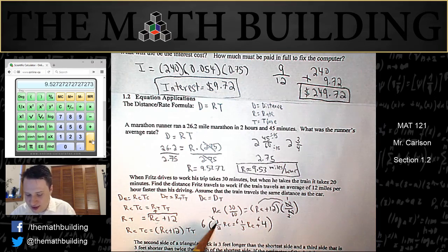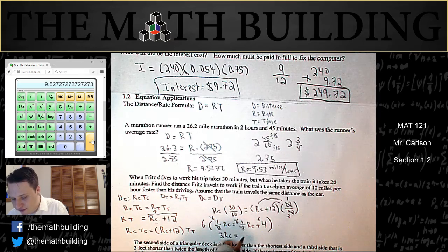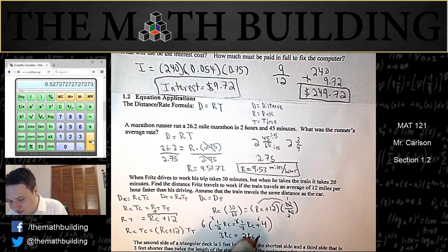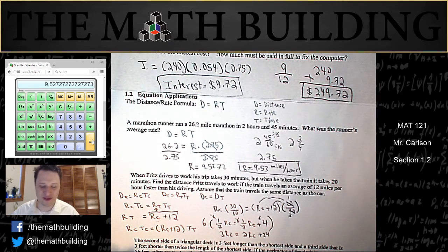So 6 times a half is 3. 6 times a third is 2. And 6 times 4 is 24. So I have 3 rc equals 2 rc plus 24.